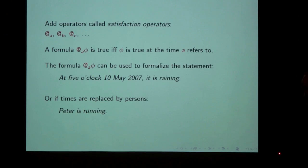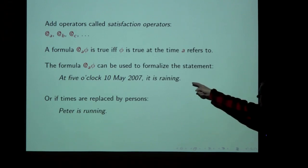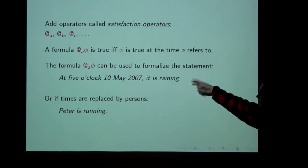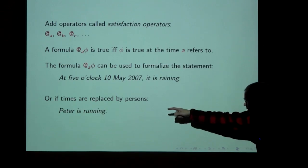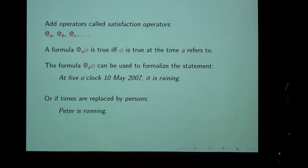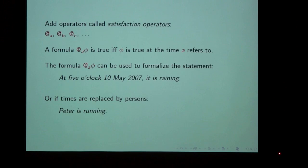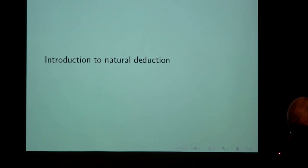Using this machinery we can formulate statements like 'at 5 o'clock May 10th 2007, it is raining' — so we can state that something happens at a particular time. Similarly, we can state that a particular person is doing something, for example 'Peter is running' or 'John is bicycling.' So we started with standard modal logic and added two pieces of machinery: nominals and satisfaction operators. That gives us the hybrid logic I need for my purpose.